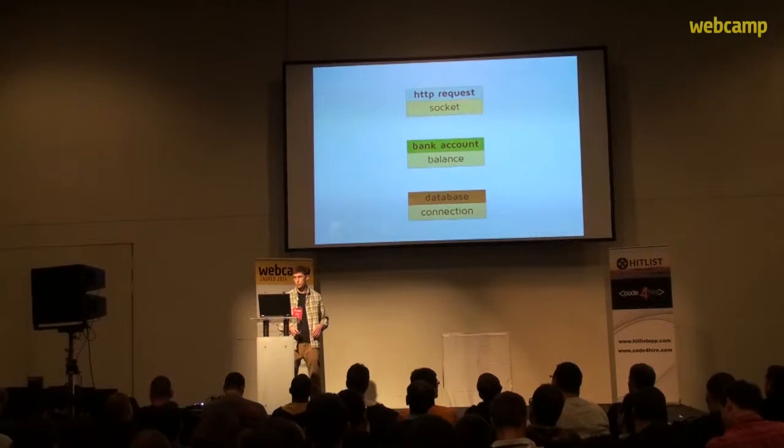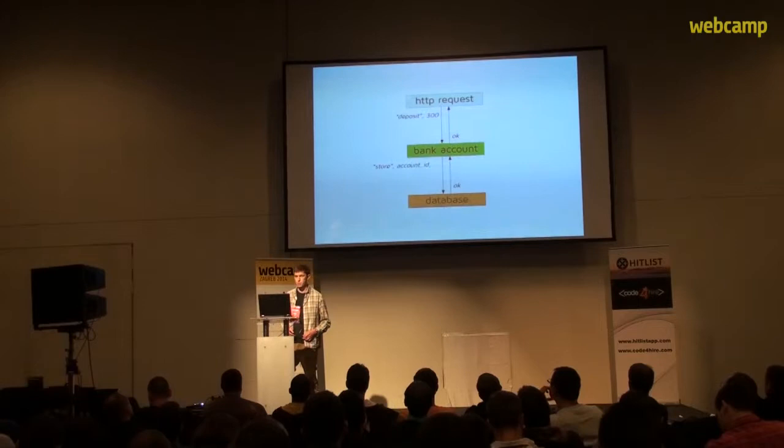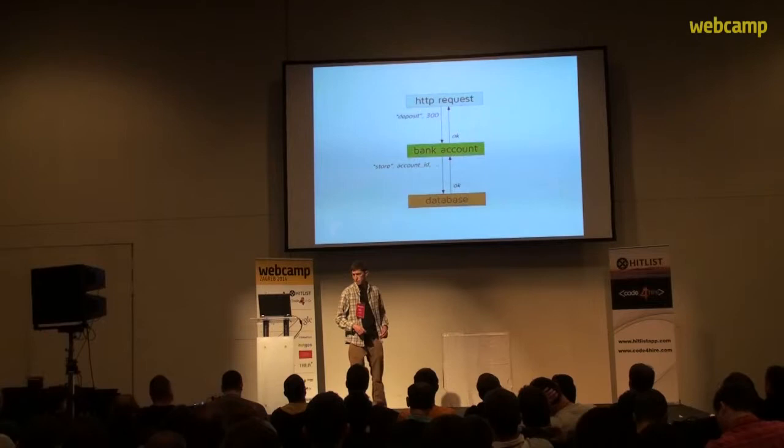They will, of course, have to cooperate and coordinate, and for this purpose we can use messages. Actors may communicate via messages — this is also known as message passing. A message here is essentially some data. In there we usually have some kind of a message identifier, something like deposit, withdraw, store, retrieve, and then depending on the message type, we may have some additional data such as the amount of money.